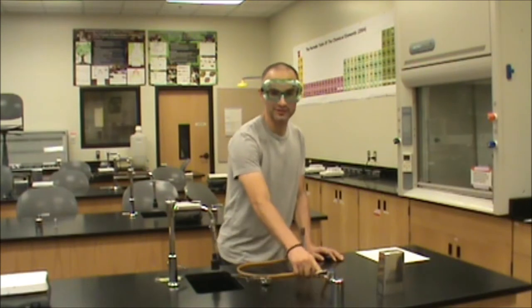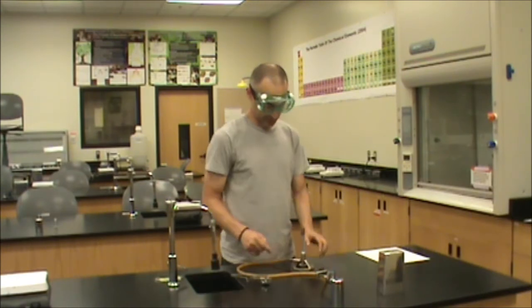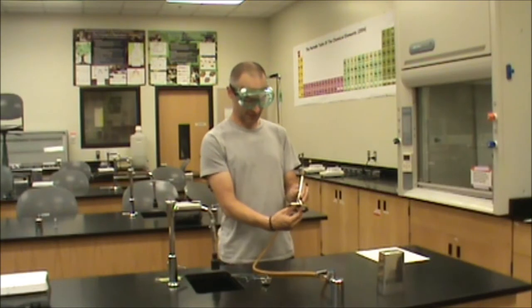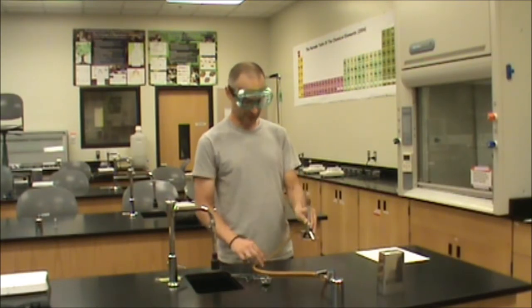You want to connect the Bunsen burner to the gas jack located at the front of your workstation. You want to make sure the valve at the base of the Bunsen burner is turned on at least a few turns.